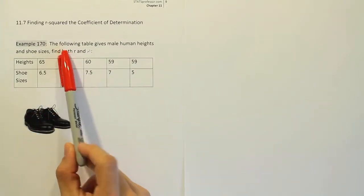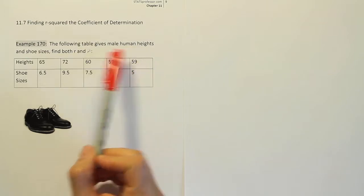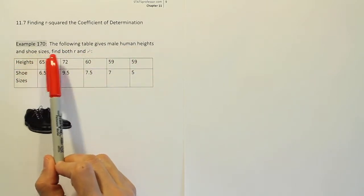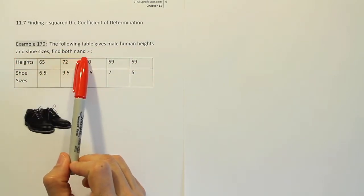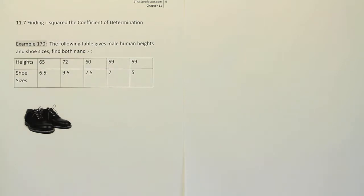Example 170. The following table gives male human heights and shoe sizes. Find both r and r squared. Okay, so we have a table, and it gives us heights for men and their shoe sizes.